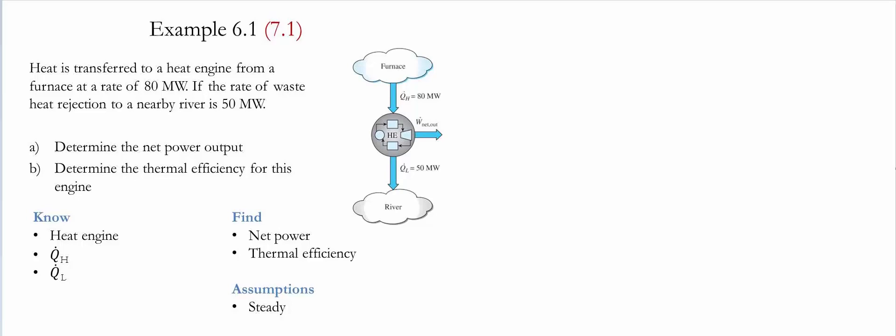Example 6.1 or 7.1 for the given textbooks. For details please see the description below. Heat is transferred to a heat engine from a furnace at a rate of 80 megawatts. If the rate of waste heat rejection to a nearby river is 50 megawatts, we need to determine the net power output and the thermal efficiency for this engine.